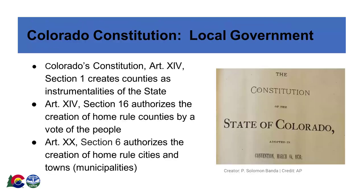Colorado's Constitution identifies three forms of local government in Colorado. Article 14, Section 1 authorizes Dillon's Rule counties, which operate as instrumentalities of the state. Under Dillon's Law, counties are limited to only the powers authorized by state statute, and the executive and legislative functions are vested in the Board of County Commissioners. Most Colorado counties operate under Dillon's Law.